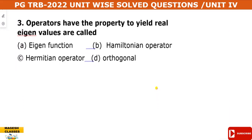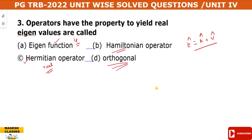An operator whose eigenvalues are real is called a Hermitian operator. The wave function has specific properties, and the Hamiltonian operator is the total energy operator — it is the combination of kinetic energy plus potential energy.